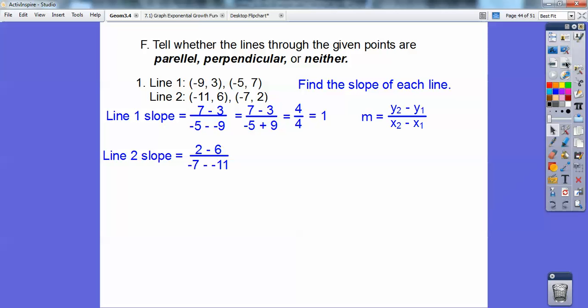Do line 2. y₂, y₁, x₂, x₁. So the slope of this one is negative 1. This is 1 over 1, this is negative 1 over 1. These are opposite reciprocals of each other. They're opposite signs and they're reciprocals of each other. So they're perpendicular.